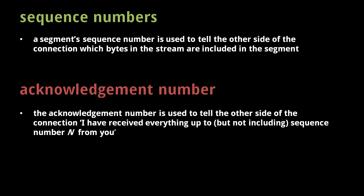The sequence number of a header signifies which bytes of the stream are included in the segment. The acknowledgement number tells the other side of the connection that every byte of the stream up to N has been received. For example, a segment with 20 bytes of data and sequence number 100 represents bytes 100 to 119 of the stream being sent from this side of the connection. A segment with acknowledgement number 350 tells the other side that every byte up to, but not including, byte 350 of the stream from the other side has been received.